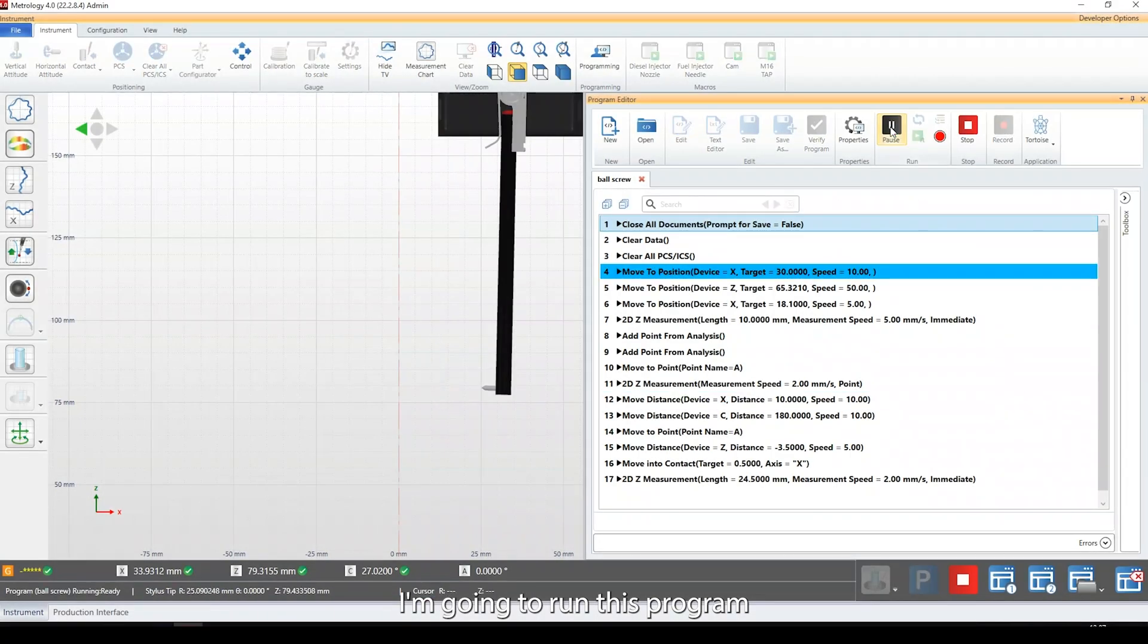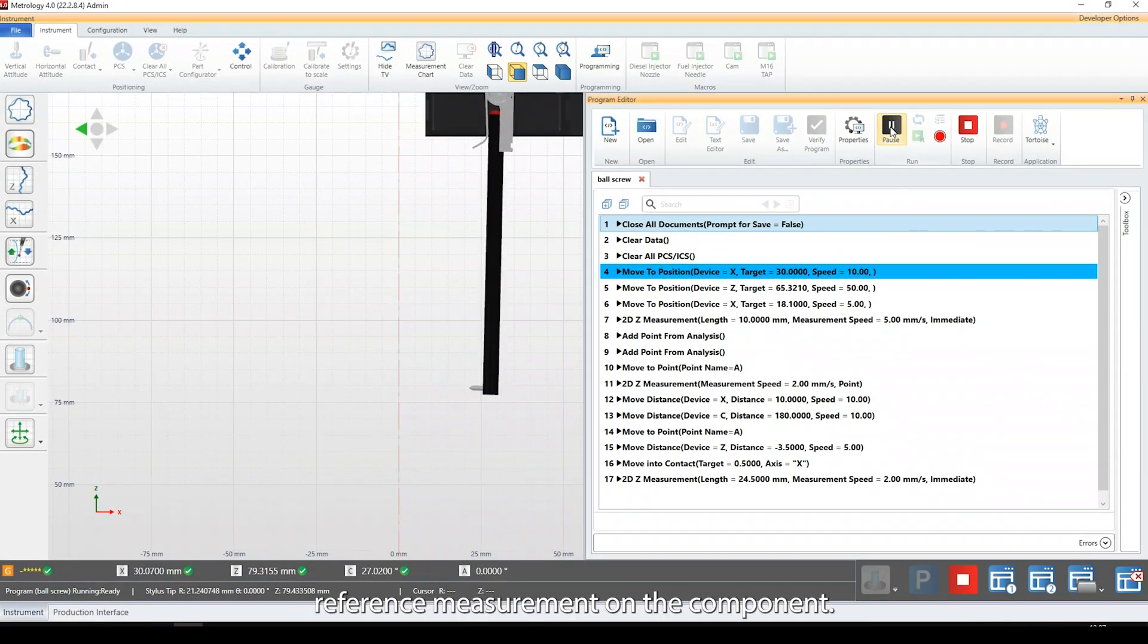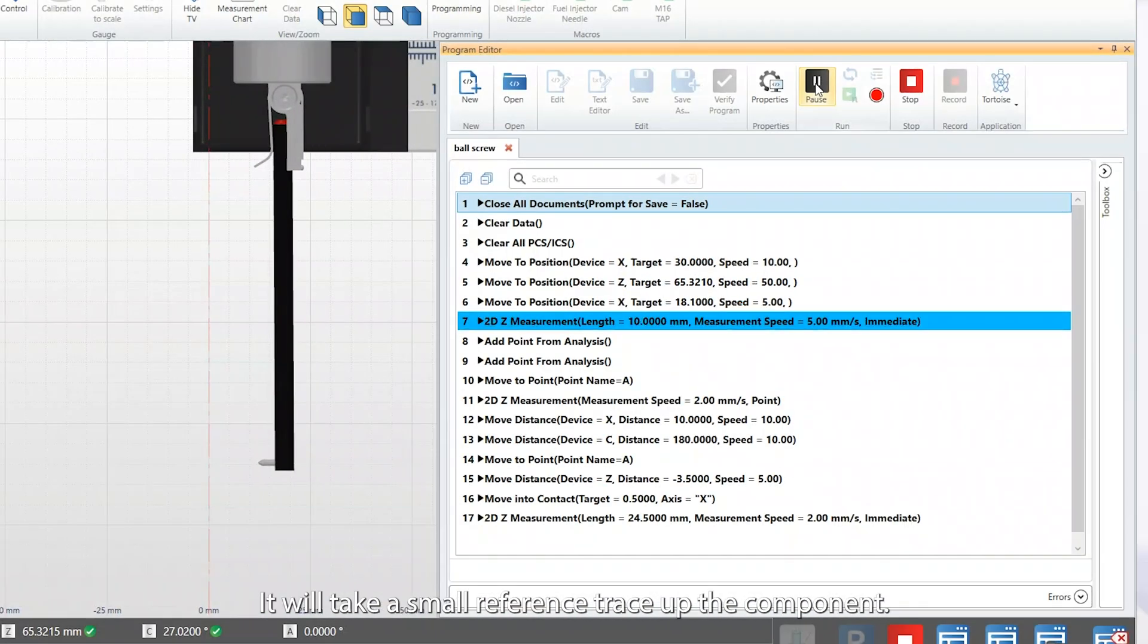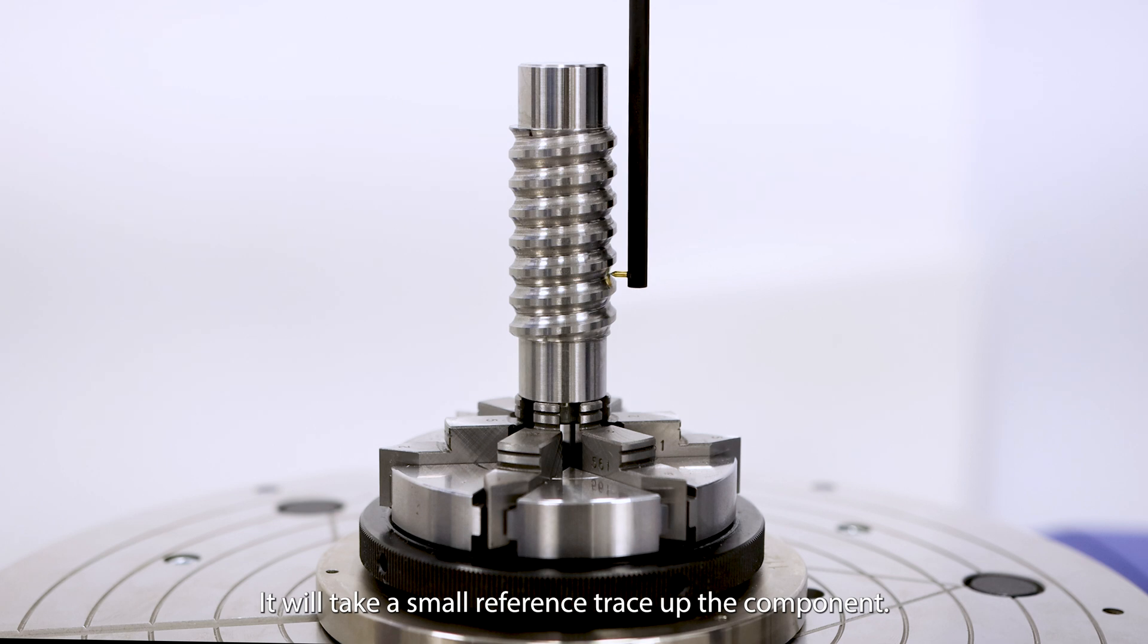I'm going to run this program and we're going to take the first reference measurement on the component. The stylus will contact onto the reference position and take a small reference trace of the component.